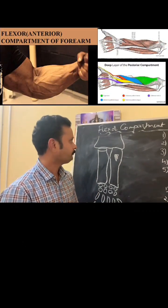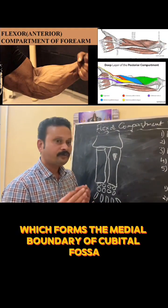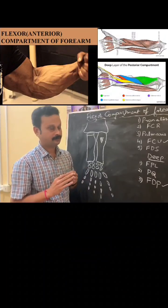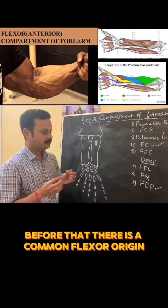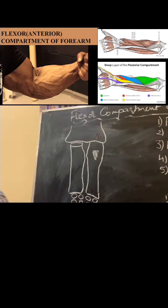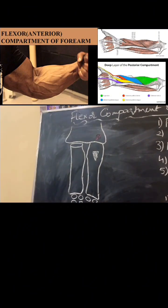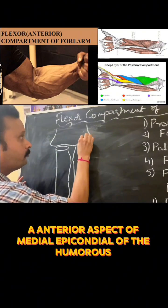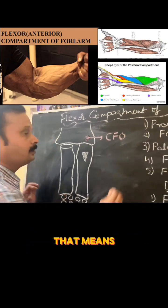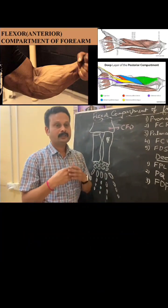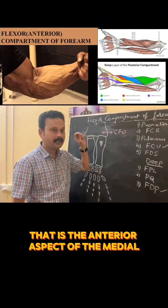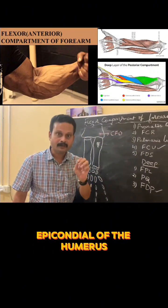Somewhat rounded in shape, which forms the medial boundary of the cubital fossa. There is a common flexor origin, which is the anterior aspect of the medial epicondyle of the humerus. This is considered the common flexor origin — that means the majority of the superficial flexor muscles of the forearm take origin from this point, the anterior aspect of the medial epicondyle of the humerus.